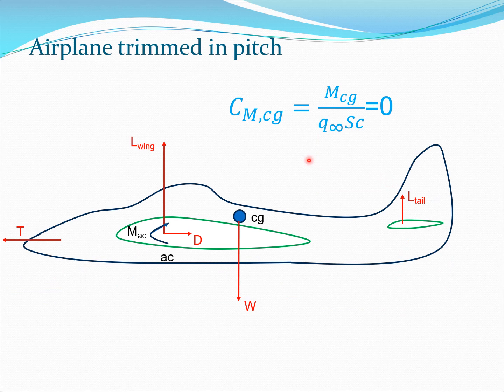When we discuss about a trimmed condition, we consider the situation where the airplane is trimmed in pitch. This is the situation where MCG is zero, or equivalently CMCG is zero. This is the trimmed or equilibrium condition of the aircraft. Essentially, if we take the moment of all the forces acting on the aircraft about the CG, this moment should be equal to zero.